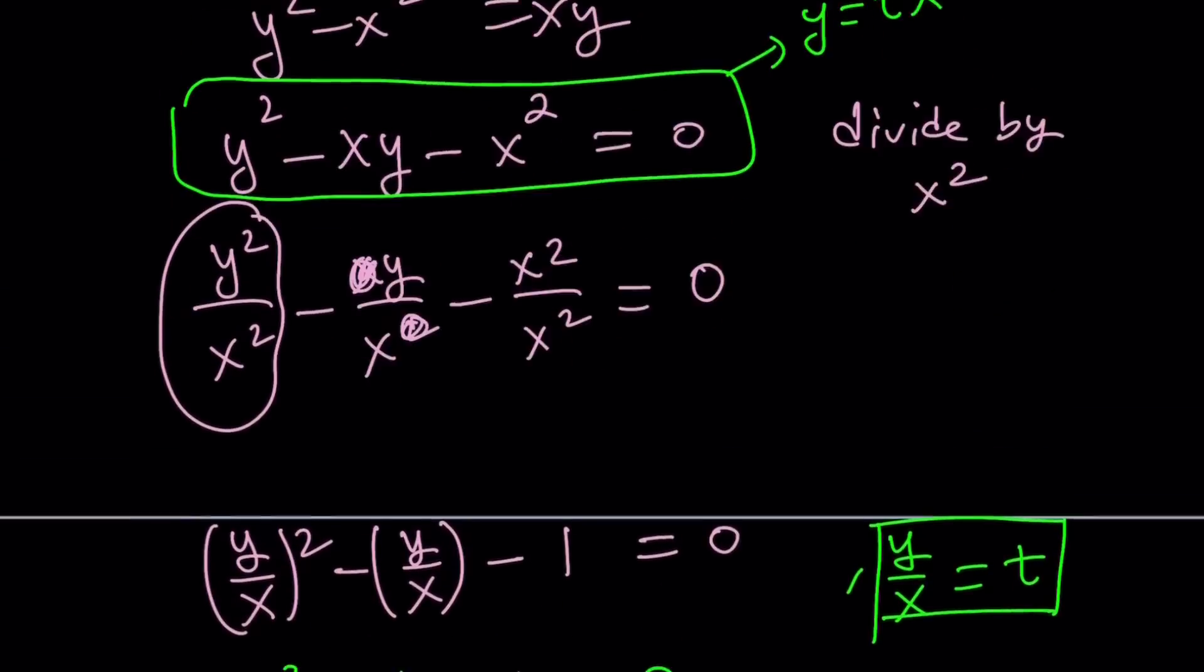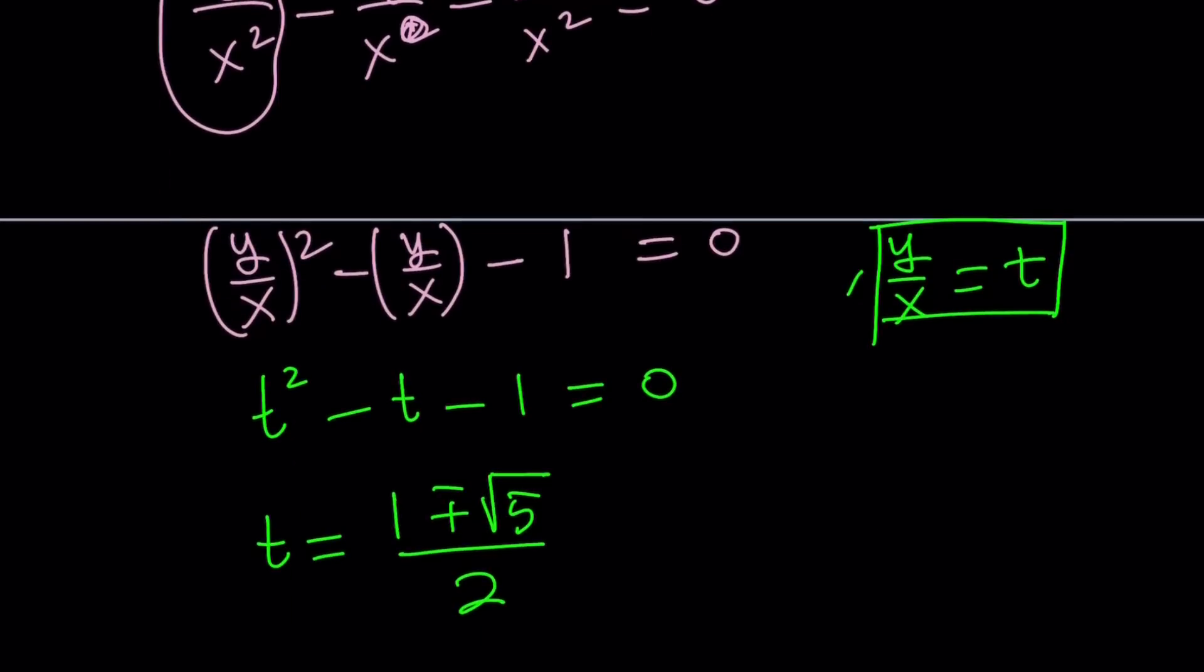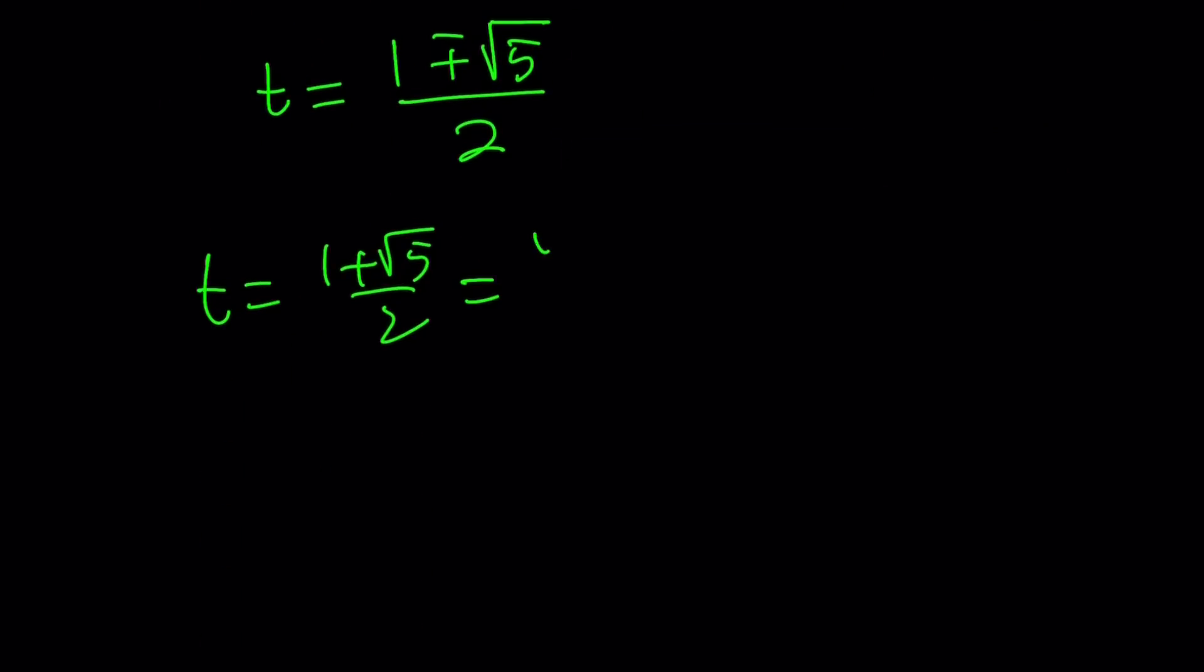And if you remember, t is y over x. So we can go ahead and set this equal to y over x. And from here we're going to get y equals 1 plus root 5 over 2 times x.